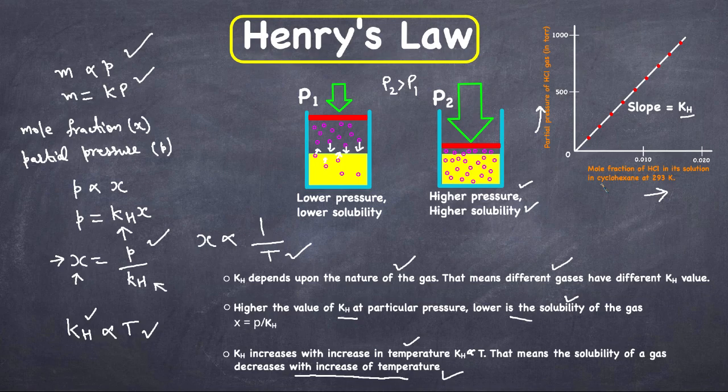Here is another example: this graph shows the solubility of HCl gas in cyclohexane at 293 Kelvin. The straight-line graph demonstrates the validity of Henry's Law. The slope of the line gives the Henry's Law constant kH, and as the partial pressure increases, the solubility of HCl gas in cyclohexane increases.